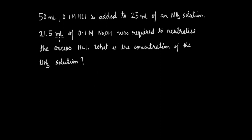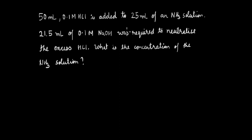Let's go through this problem which says that 50 ml of 0.1 molar HCl is added to 25 ml of an NH3 solution. 21.5 ml of 0.1 molar NaOH was required to neutralize the excess HCl. So what is the concentration of the ammonia solution?